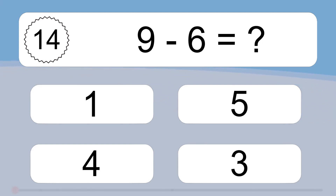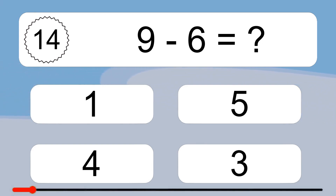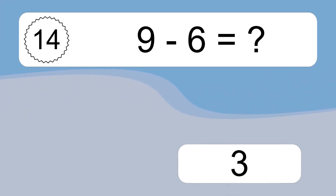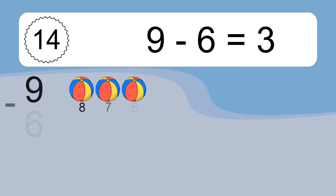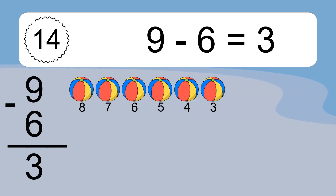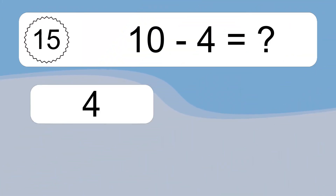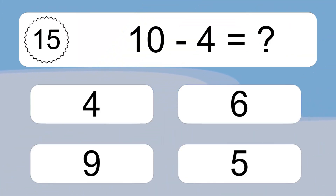9 minus 6 equals what? 9 minus 6 equals 3. Let's count it. 8, 7, 6, 5, 4, 3.